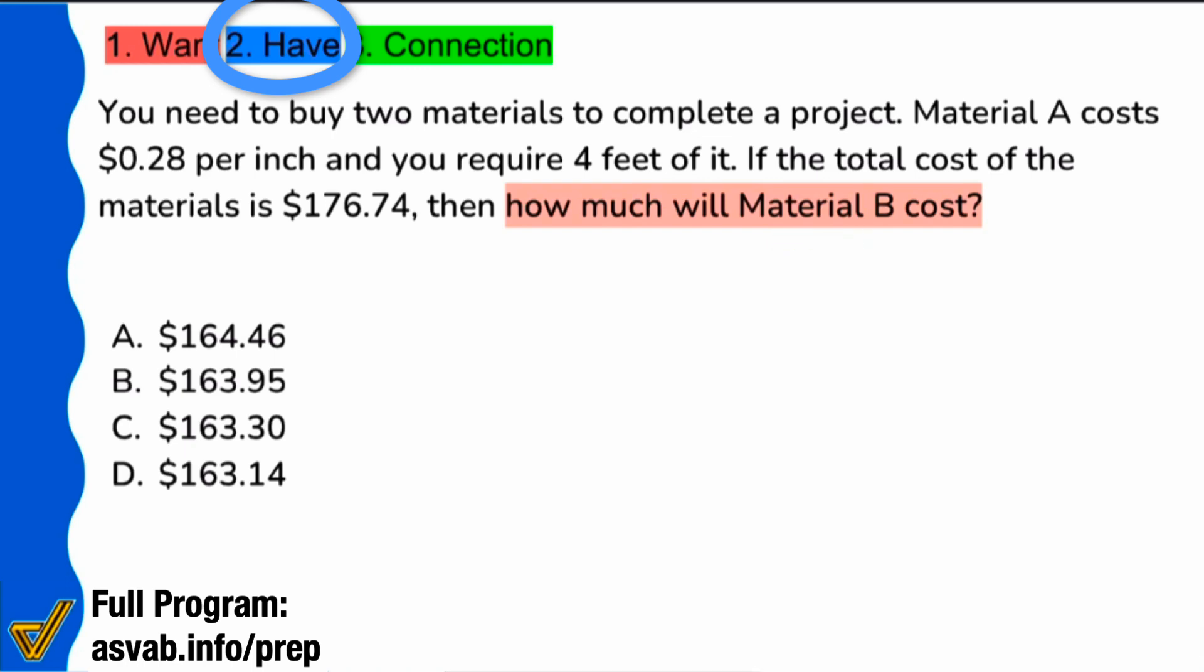As you read the question, it'll really open itself up to you because you'll see that we have material B but also material A. We need to buy these two materials to complete a project and we're told some details about A. Material A costs 28 cents per inch and we need 4 feet of it. But that doesn't really tell us about material B.